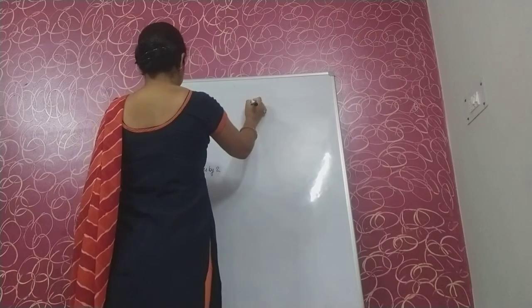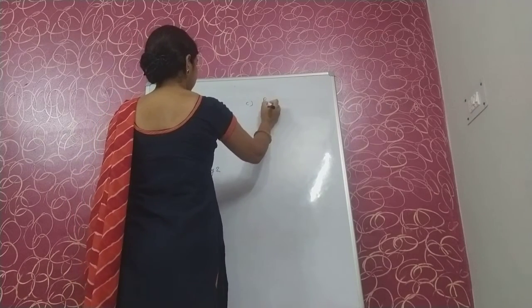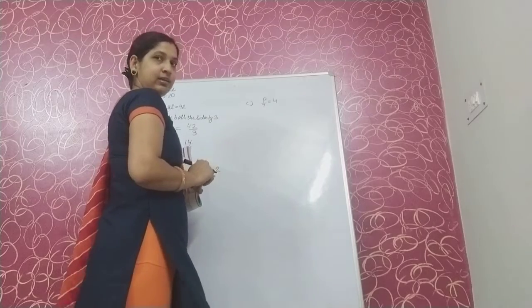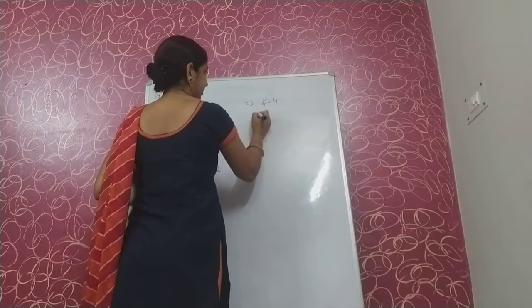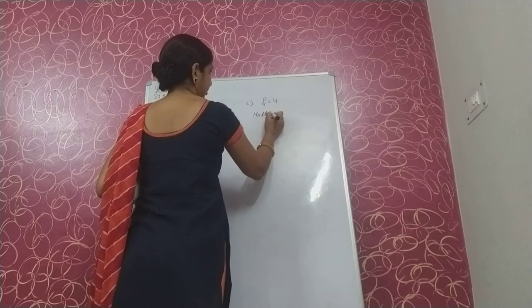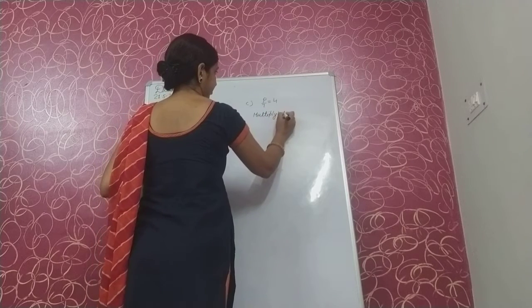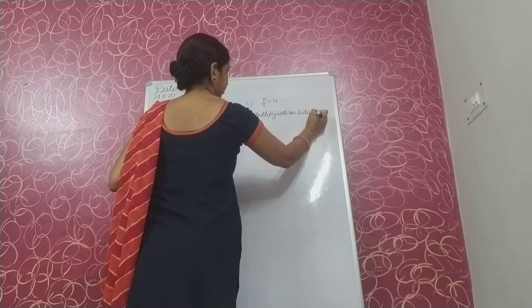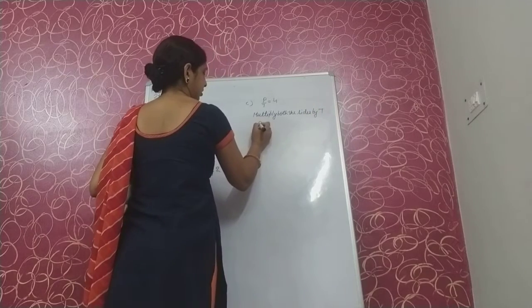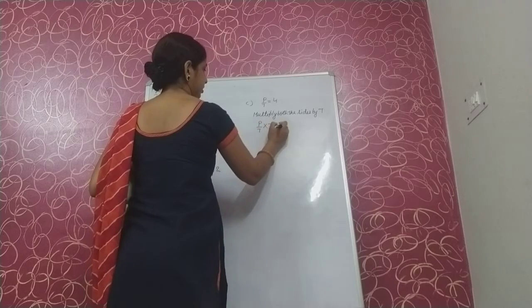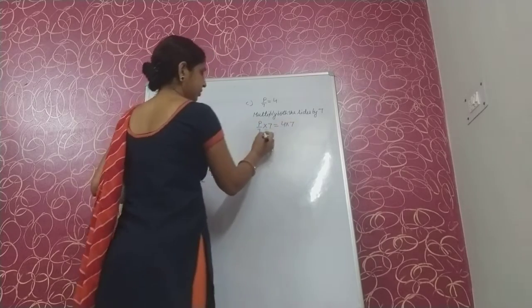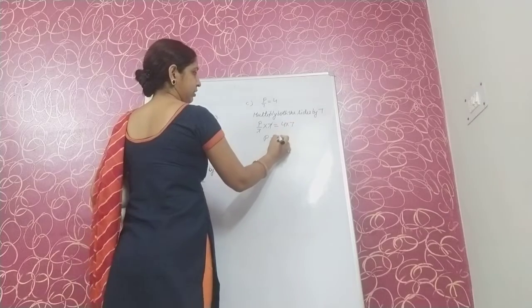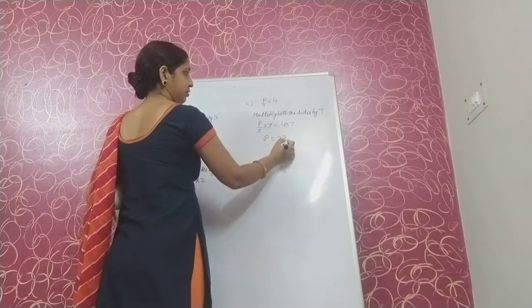Next part: P upon 7 is equal to 4. Here P is divided by 7, so multiply both sides by 7. P upon 7 multiplied by 7 is equal to 4 multiplied by 7. This 7 gets cancelled by the other 7. So on the left we have P. 4 into 7 is 28. So the value of P is 28.